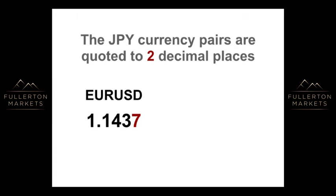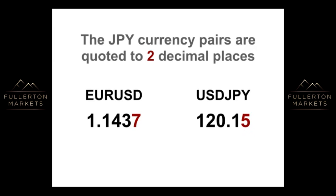The Yen currency pairs are quoted to 2 decimal places. As an example, if the USDJPY is quoted at 120.15, this means that 1 USD is equal to 120.15 JPY at that point of time.